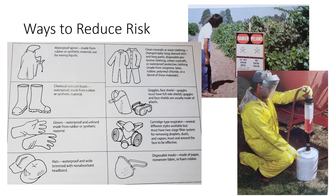Wearing protective clothing and equipment reduces the risk of exposure when handling pesticides or entering an application site before the expiration of the reentry interval. Personal protective equipment includes all or some of the following: waterproof apron, chemical-resistant boots, gloves, head protection, clean coveralls or outer clothing, goggles, face shield, and dust or mist filtering respirator or an organic vapor-removing respirator. PPE prevents pesticides from contacting the body and eyes and can protect against inhaling pesticide dust, droplets, and vapors. PPE requirements are listed on the pesticide label.